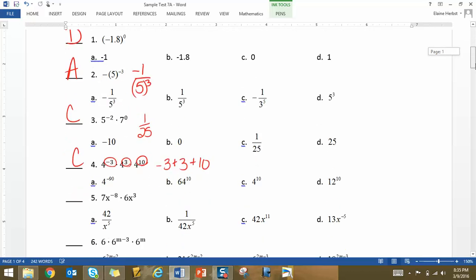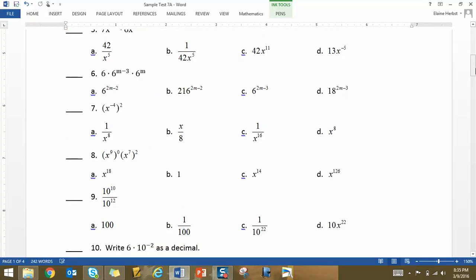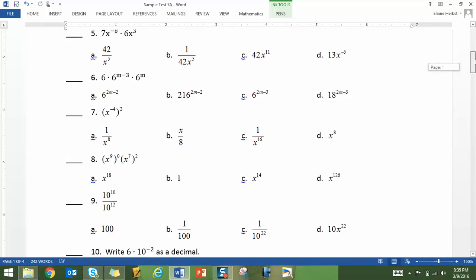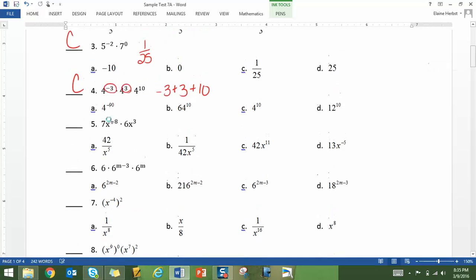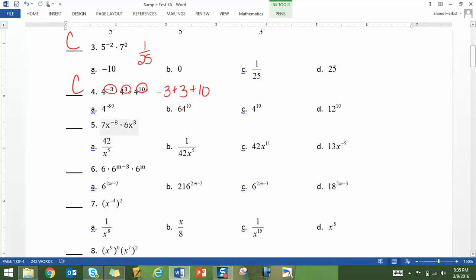Number 5, the 7 and the 6 are exponents, so those you're multiplying together. So those you're multiplying together, 6 times 7 is 42, and then you get x to the negative 5th, which means it needs to go to the bottom. So 42 over x to the 5th, the answer is A.